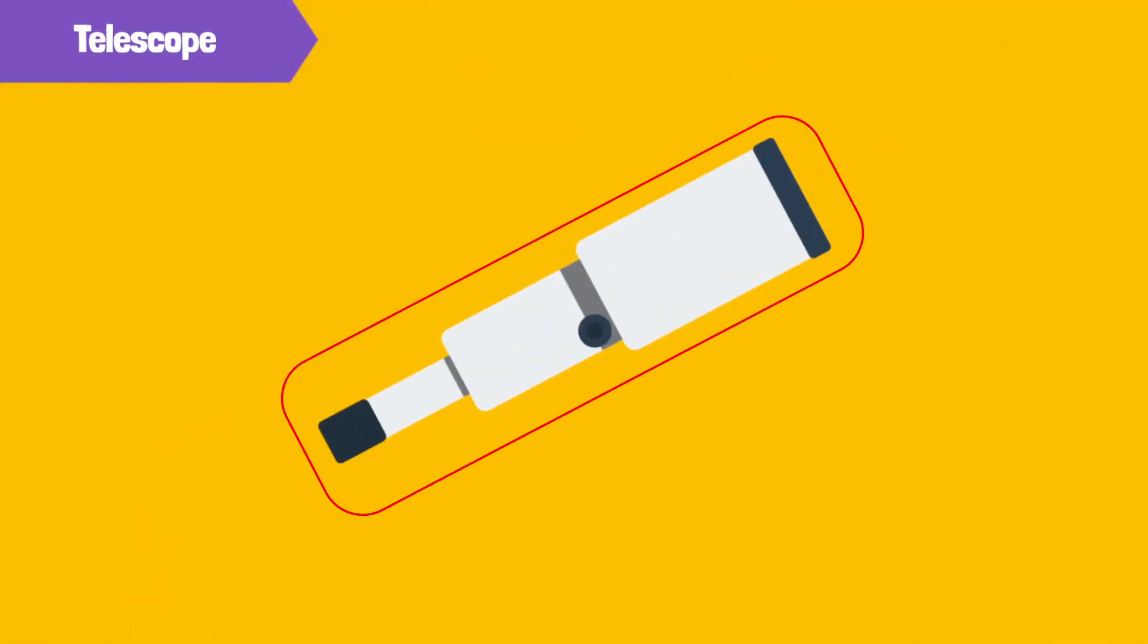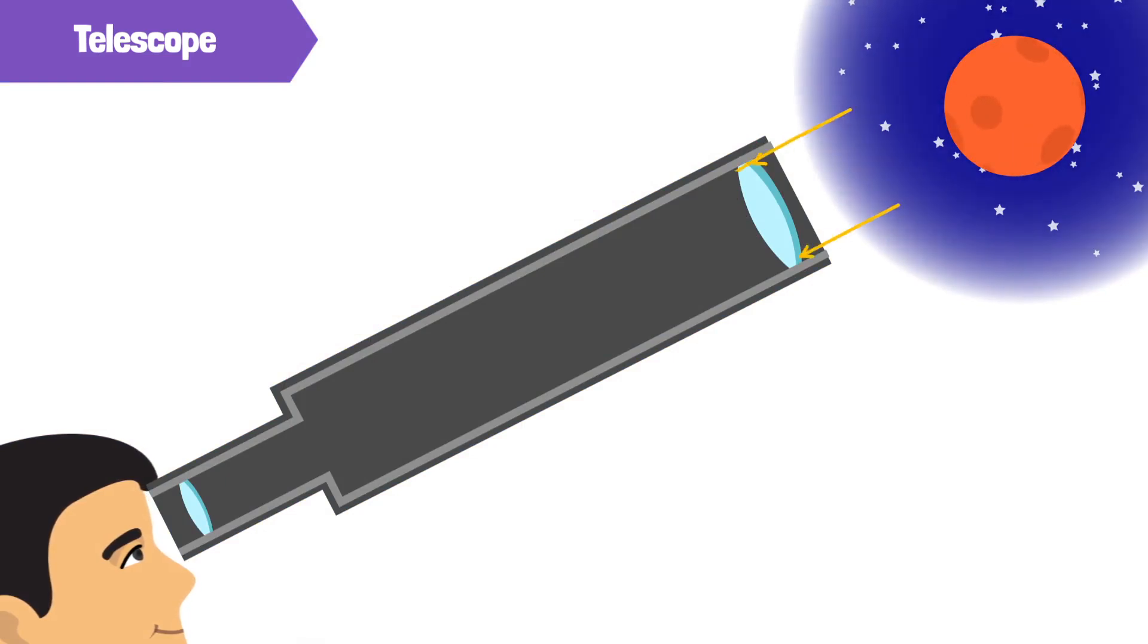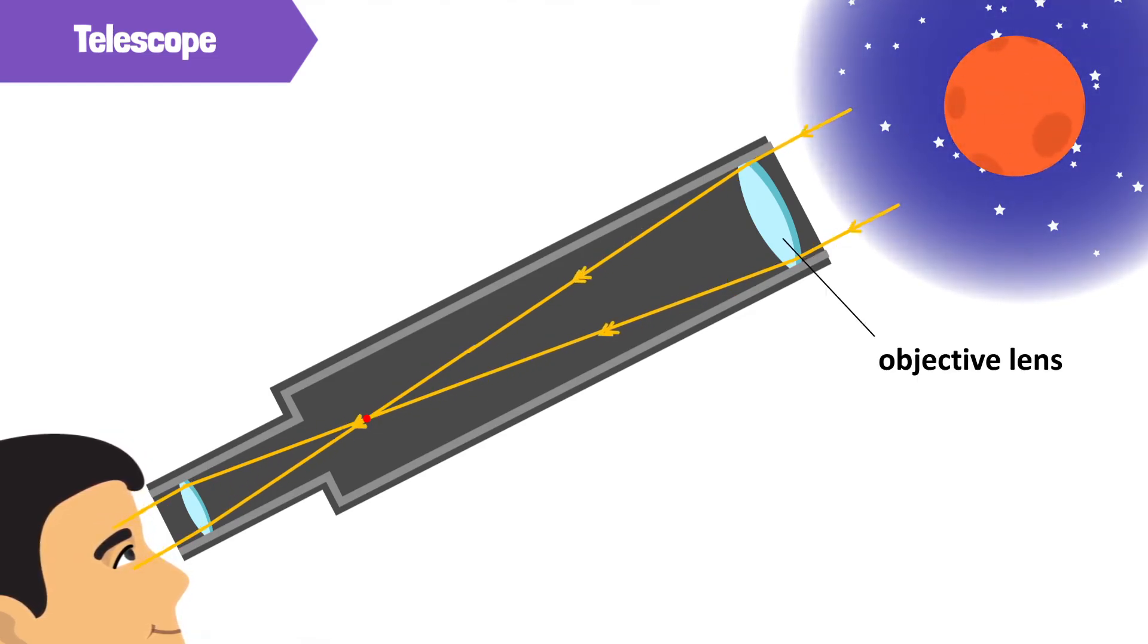A refracting telescope is a tube with one or more lens at each end. Light from a far away object enters the far end of the tube. The lens, or lenses at that end, called the objective lens, bend the light.